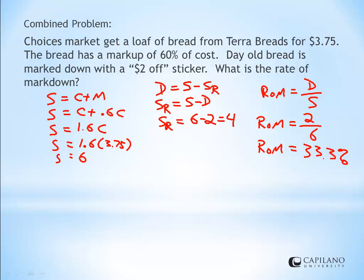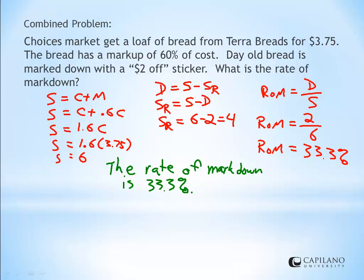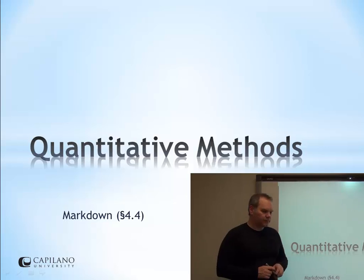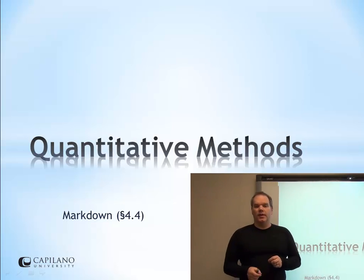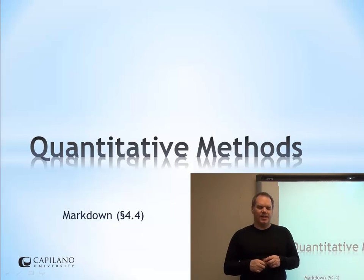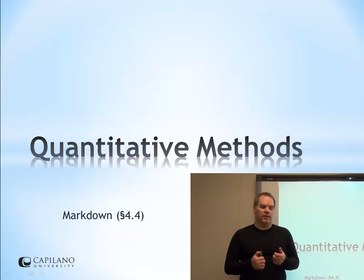So that's markdown. The key equation looks a lot like trade discounts — instead of N = L(1 - D), we use reduced price = regular price × (1 - D). We calculate rate of markdowns, cash amounts, and combine markup and markdown concepts together.